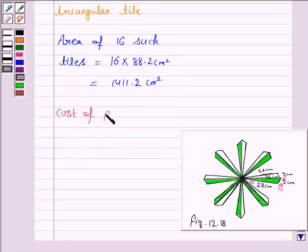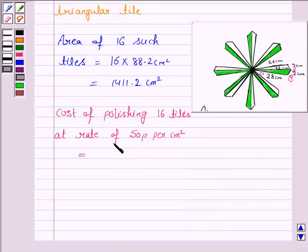Now, we find the cost of polishing 16 such tiles at the rate of 50 paisa per cm². So, the cost of polishing is given by area of the 16 tiles which is 1411.2